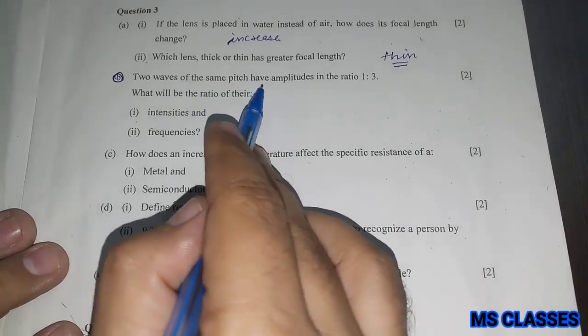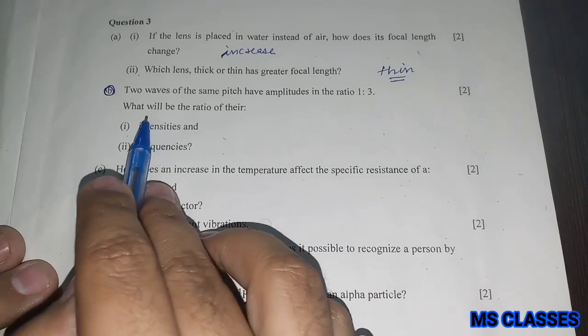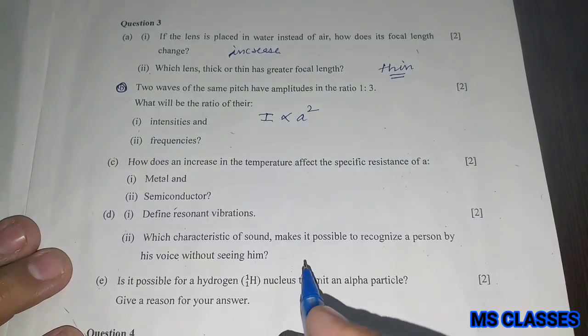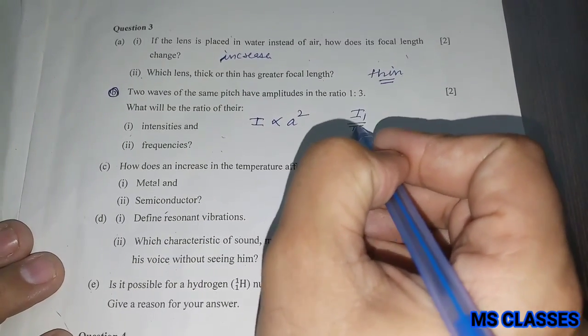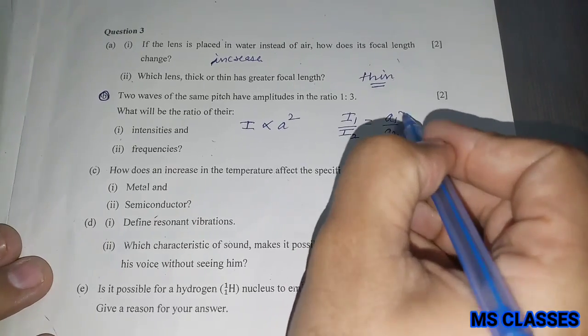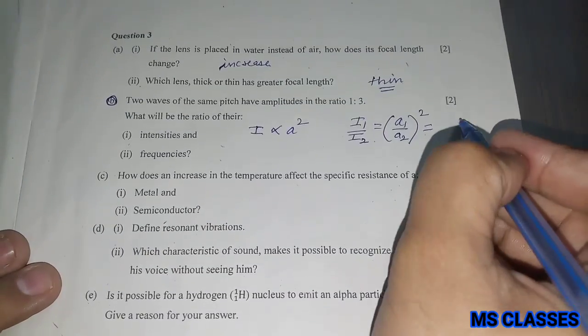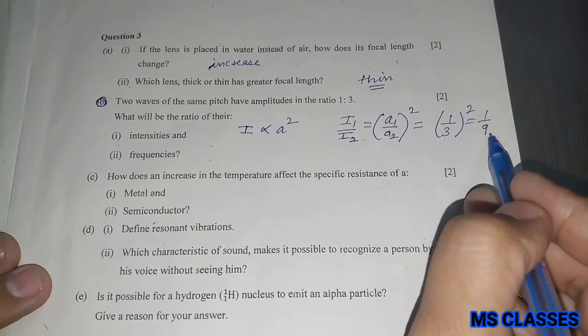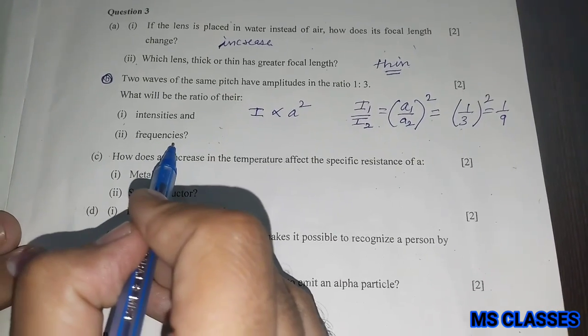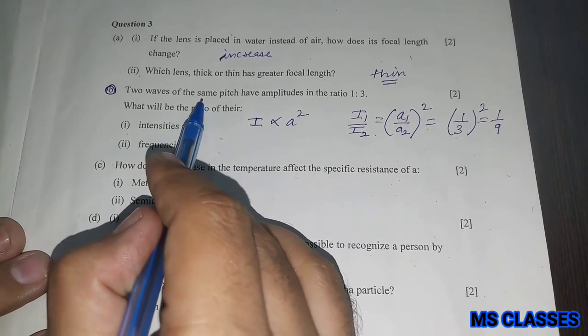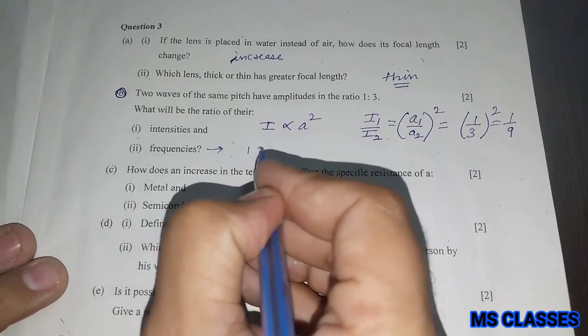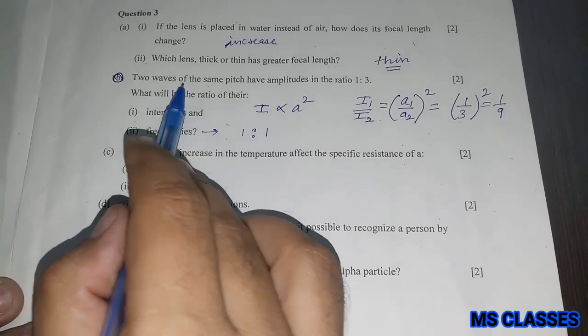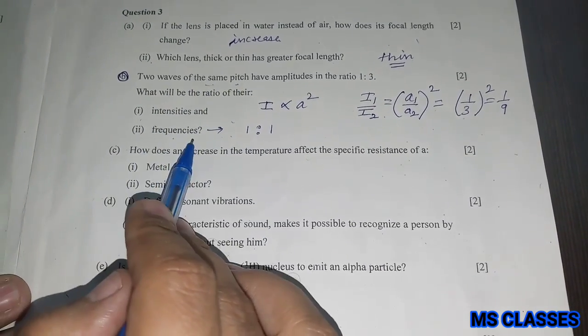Two waves of the same pitch have amplitudes in the ratio 1 is to 3. What will be the ratio of their intensities? As we know that intensity is proportional to amplitude square, therefore I1 by I2 that would be A1 by A2 whole square. Now the ratio is given 1 by 3, so the ratio of their intensities would be 1 by 9. What will be the ratio of their frequencies? As the two waves have the same pitch, therefore the frequencies remain same because frequency depends upon pitch. So as the two waves have the same pitch, therefore they will have the same frequencies.